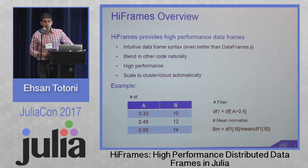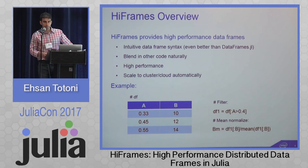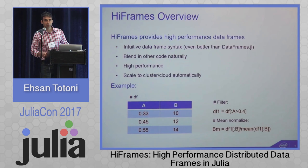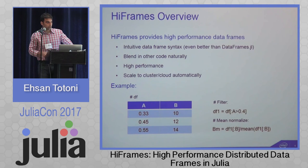Here's a quick overview of HiFrames. It provides high-performance data frames — essentially tables with various columns, where each column can have a different type than others. Our goal is to provide intuitive data frame syntax, even better than Julia's DataFrames.jl. We want data frames to blend into other code naturally without function barriers, be fast, and scale to large-scale clusters and cloud environments automatically.